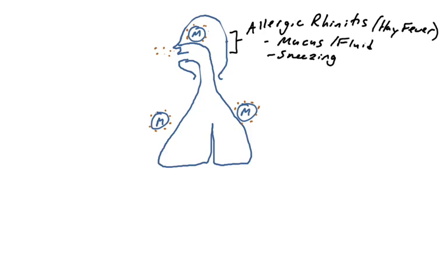So if mast cells in your nasal cavity degranulate, that's going to lead to what's known as allergic rhinitis, or hay fever. And this is characterized by swelling, fluid buildup, white blood cell recruitment in the nasal cavity. And again, this is due to inhaling allergens that are causing degranulation of mast cells in the nasal cavity.